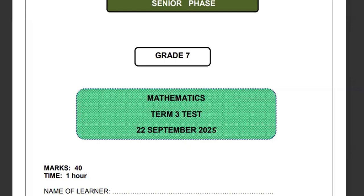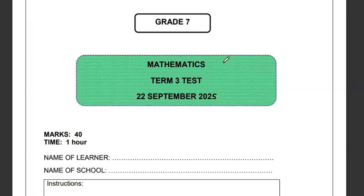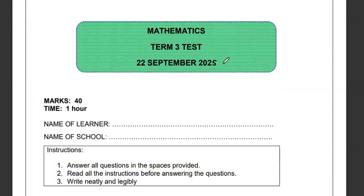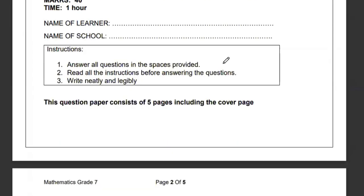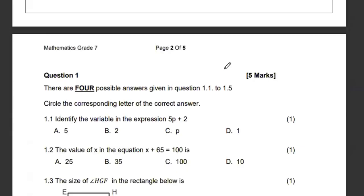Hello, welcome to yet another episode where we shall be looking at the proposed provision for the grade 7 mathematics term 3. This is a small paper out of 40 marks for one hour and we are expected to write within the paper and answer all the questions. There are four possible answers given, 1.1 up to 1.5, circle the corresponding correct answer.